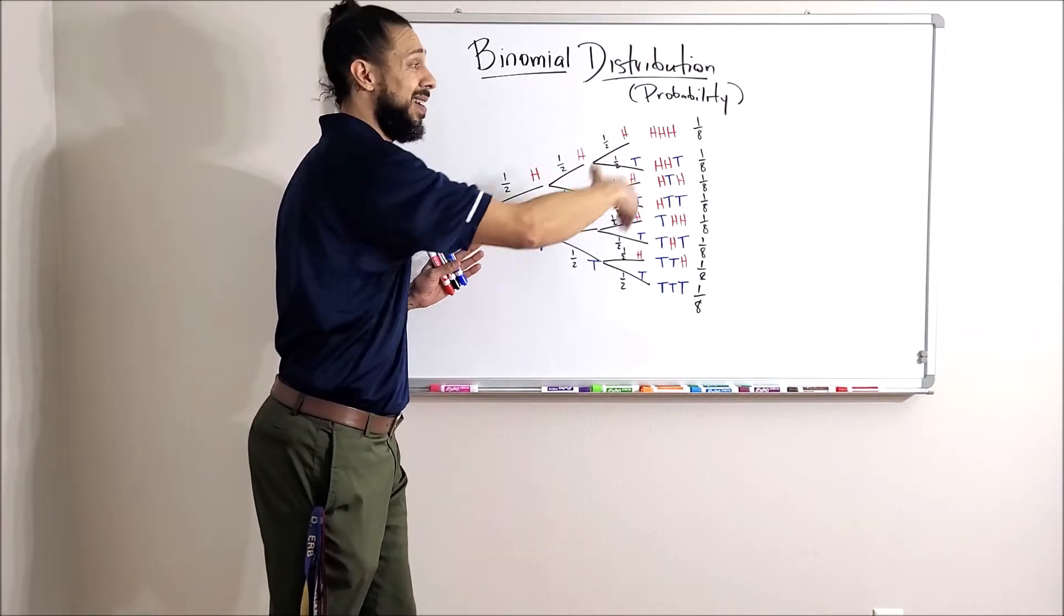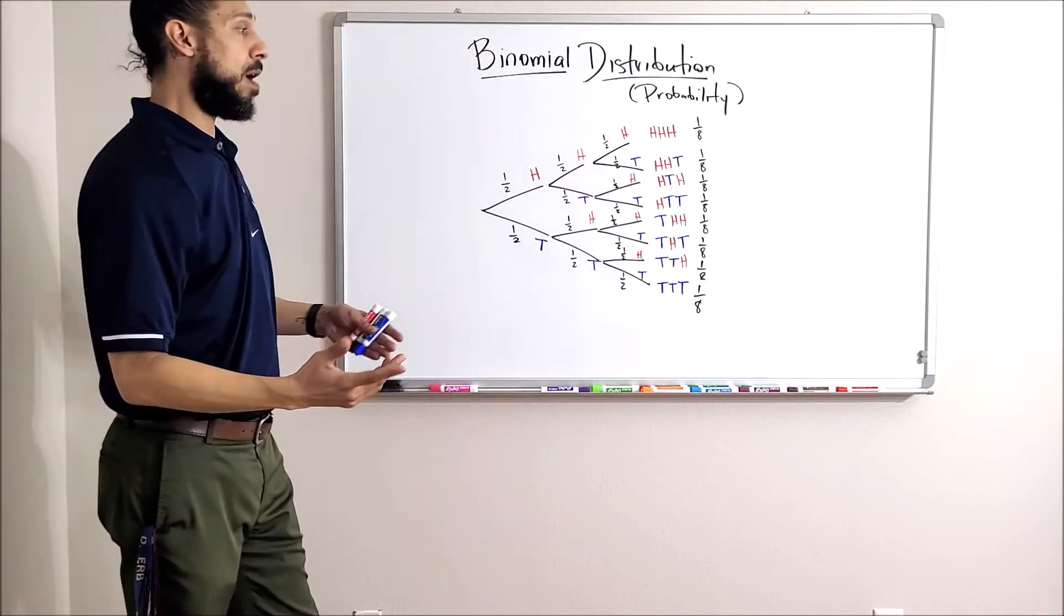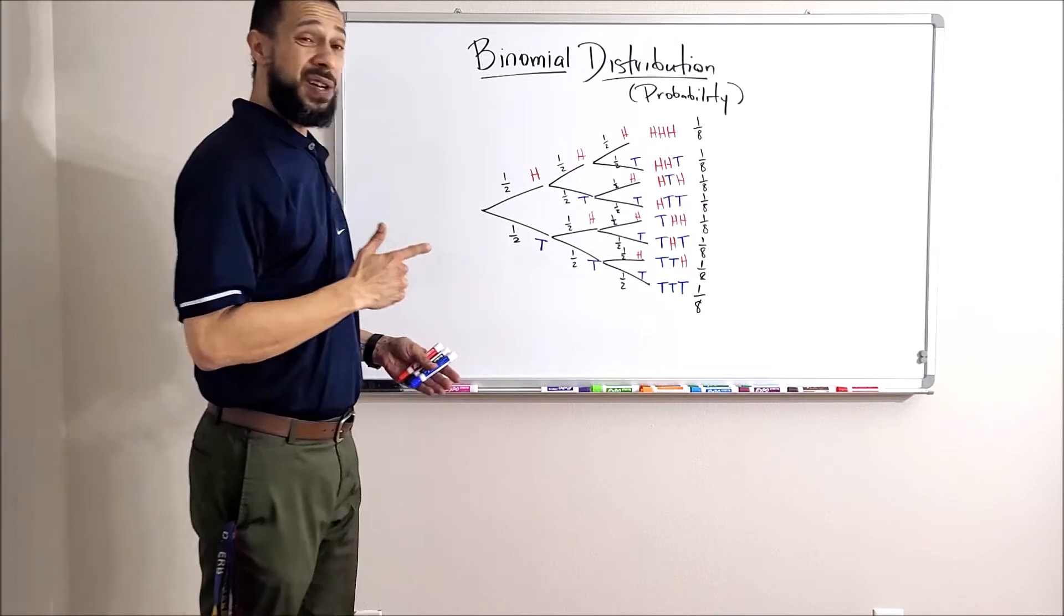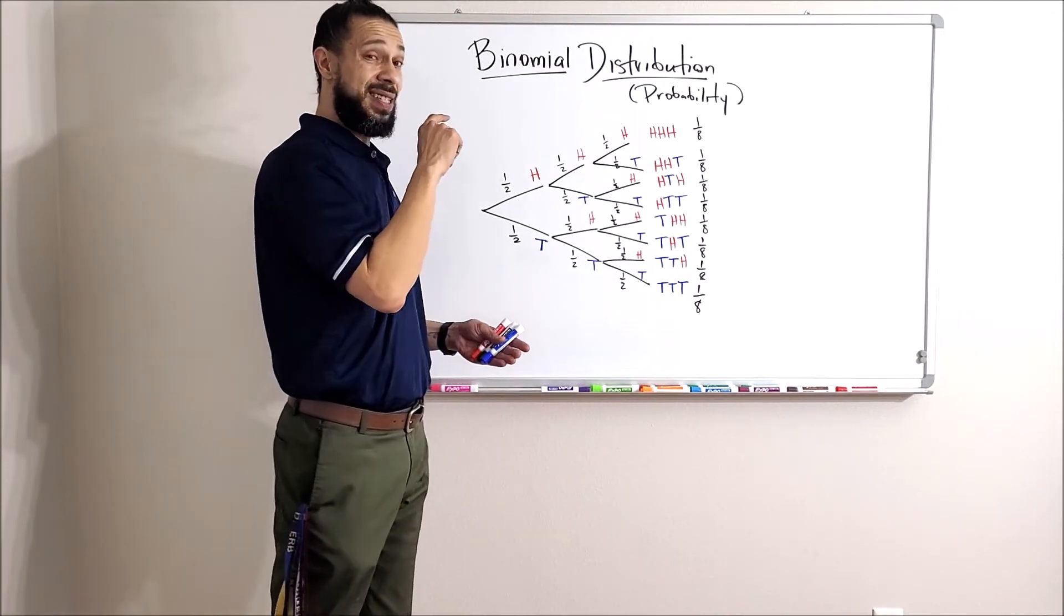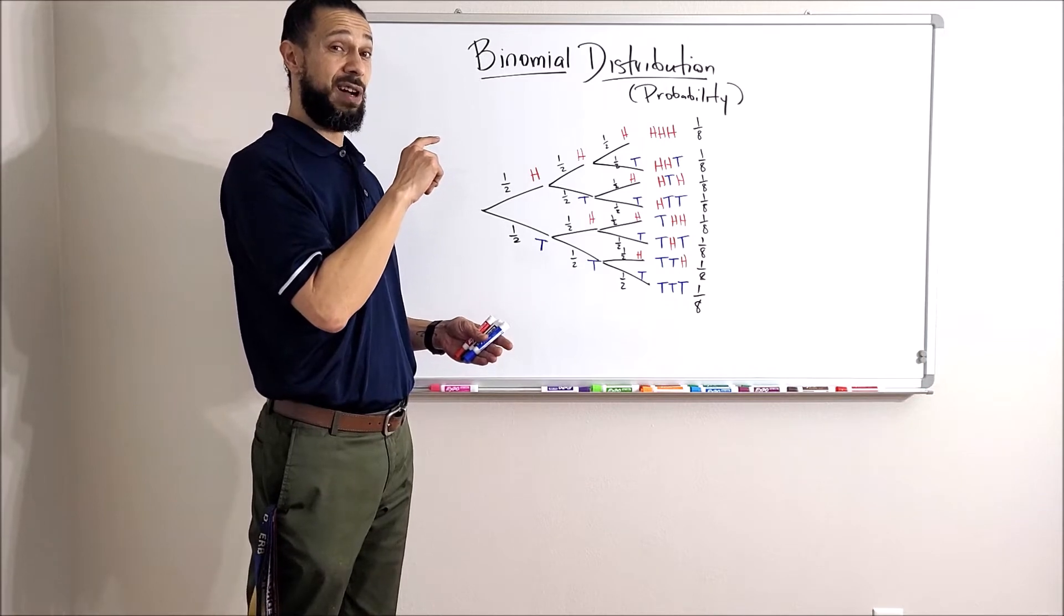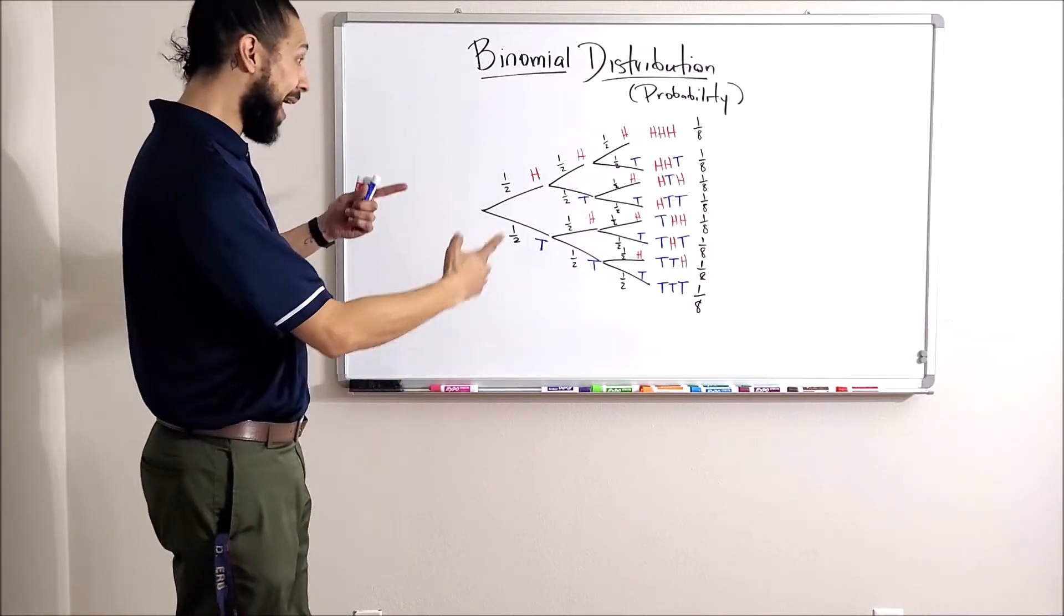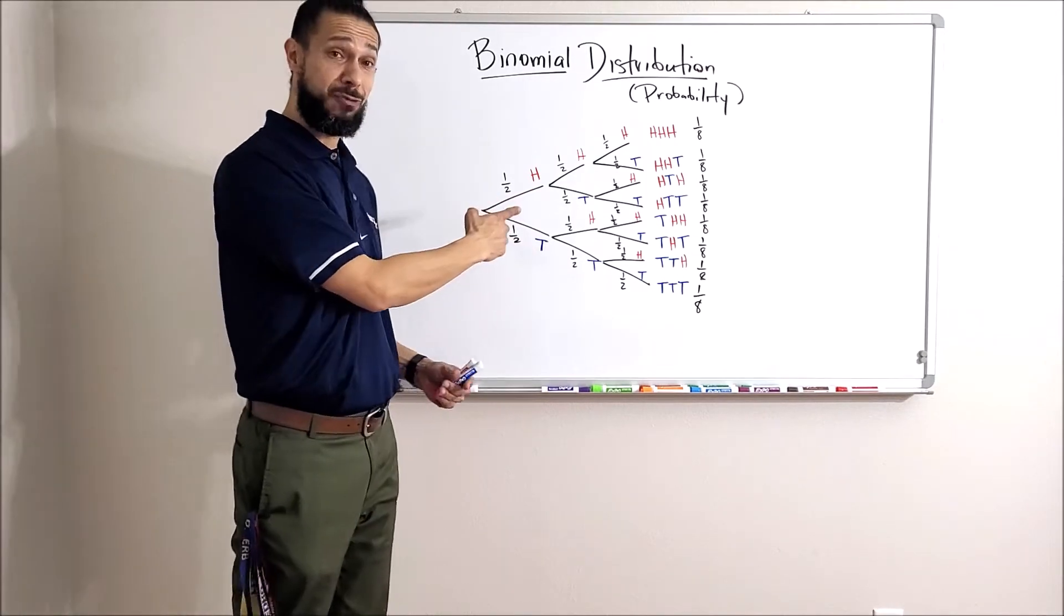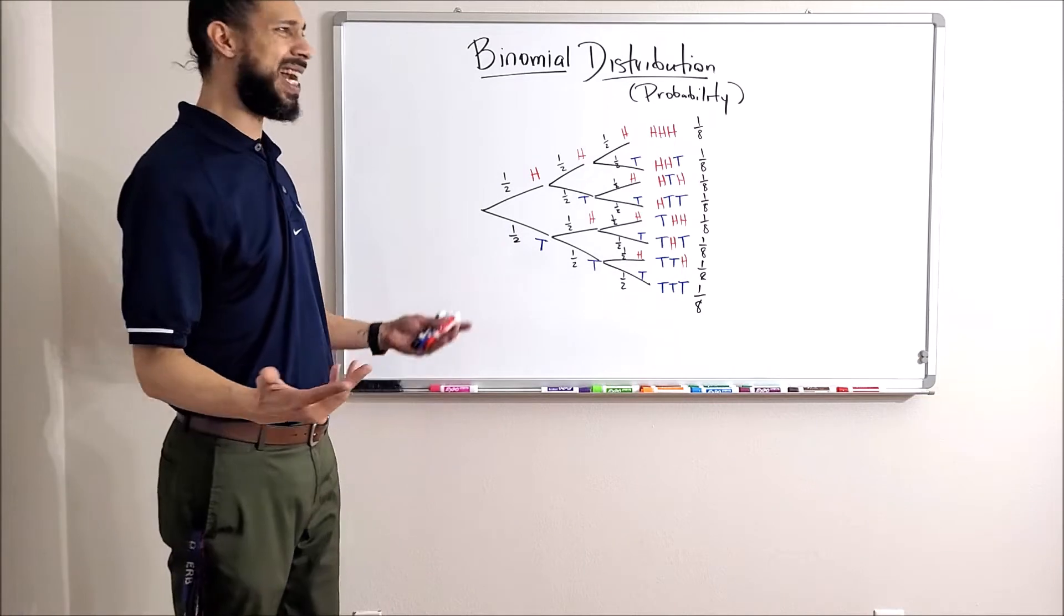This is pretty simple math with simple multiplication down each path and simple addition to add up the outcomes we're looking for. Now what if I wanted to know about 10 coin tosses? Yikes! I can't even fit 10 on my board.